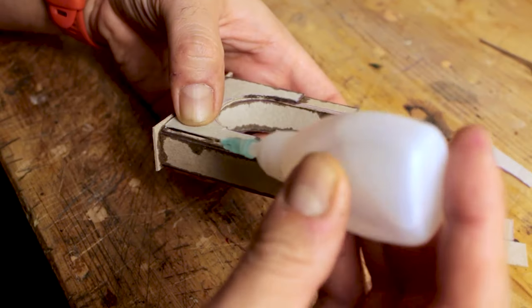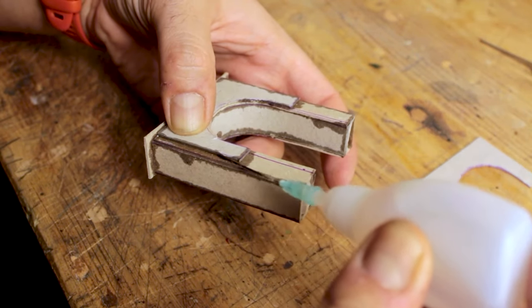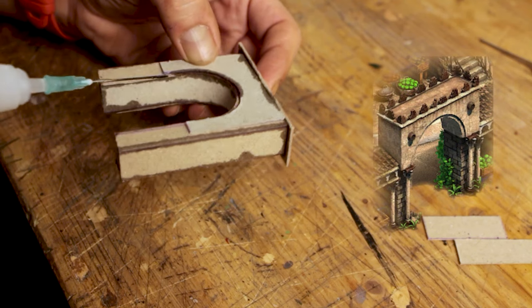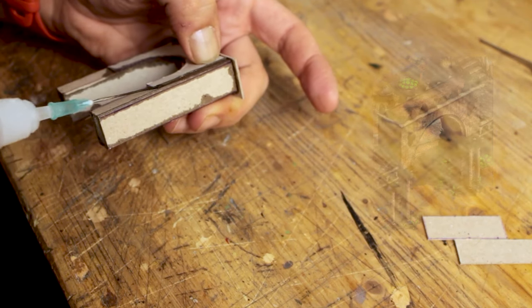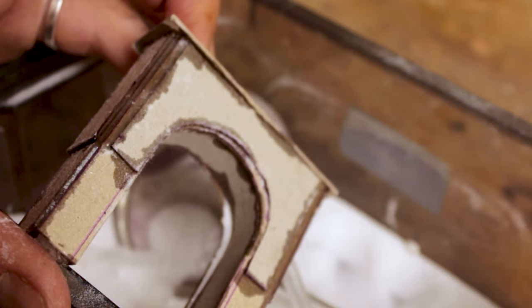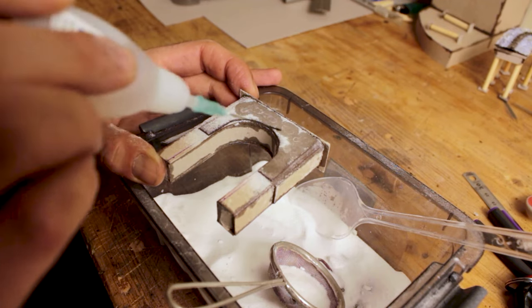After that I started on the gate section. Original design has stone wall detail on half of it. So I didn't want the top section to look thin and awkward and buffed it up with more cardboard and baking soda.